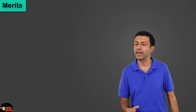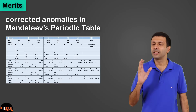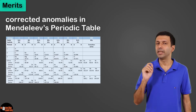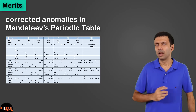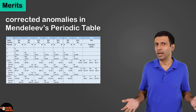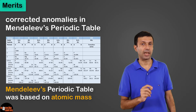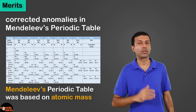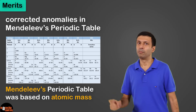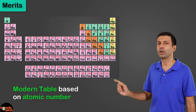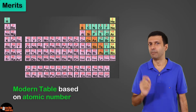Now let's discuss the merits of the modern periodic table. The merits are that it corrected the anomalies in Mendeleev's periodic table. Because Mendeleev's table was based on atomic mass, but the modern table is based on atomic number.